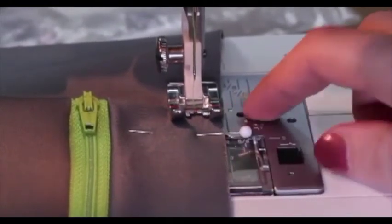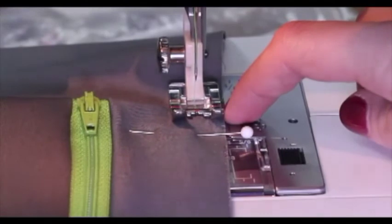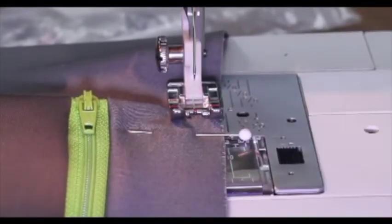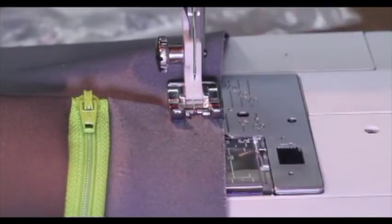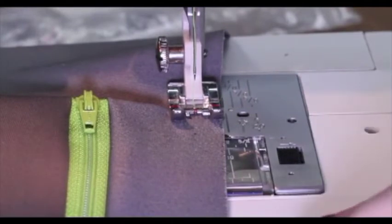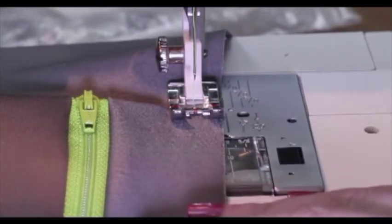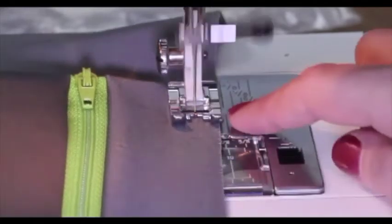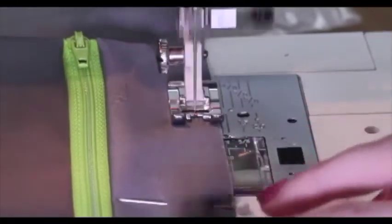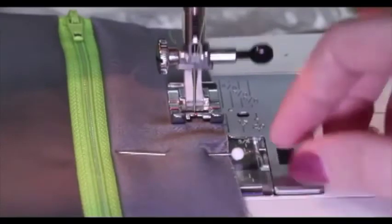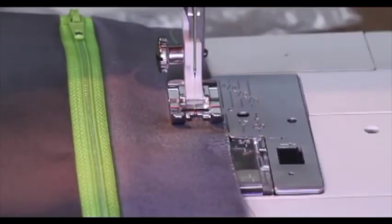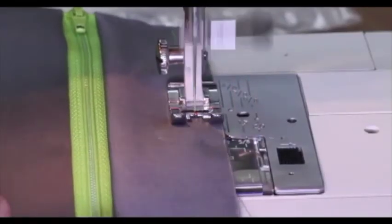I am going to have you line it up with the raw edge. You do not need to backstitch this. I know we are sewing two things together but a basting stitch is meant to be taken out. So we are just going to start our stitch keeping it nice and even all the way down.